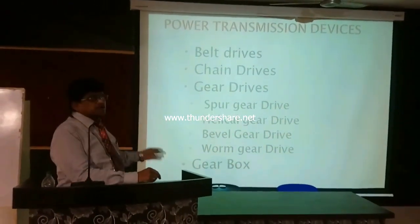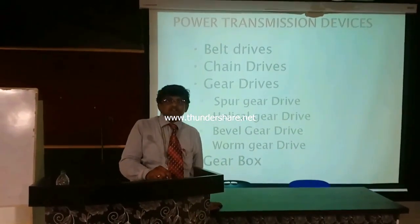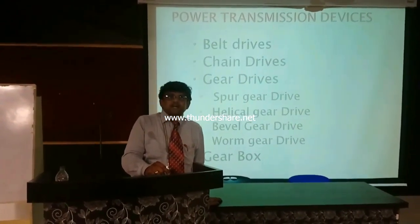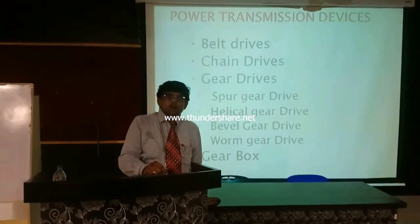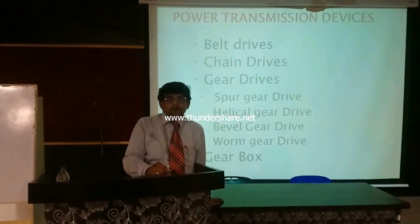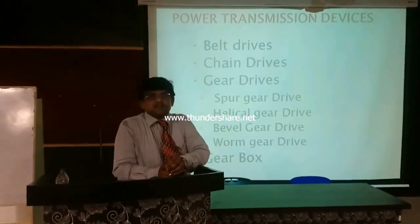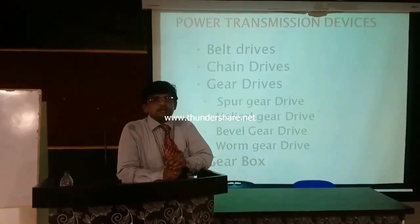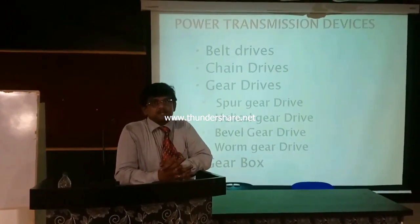Then we have the gearbox. Gearbox is used to give us a large speed reduction ratio. In spur and other gear drives, the transmission ratio is going to be only 5.5:1 to 10:1. But from a gearbox, we can achieve even 75:1 or 100:1. That is not possible in other drives, and for that reason only, we are using the gearbox.